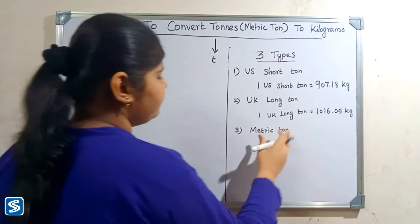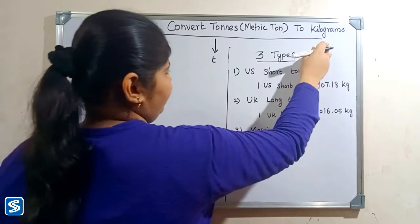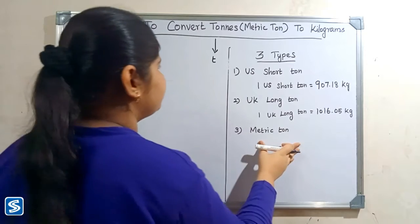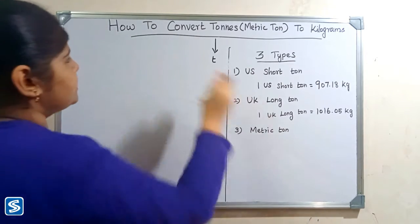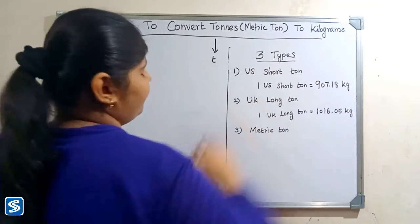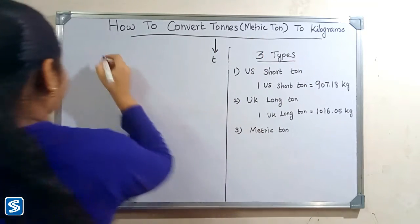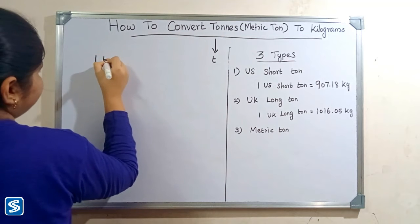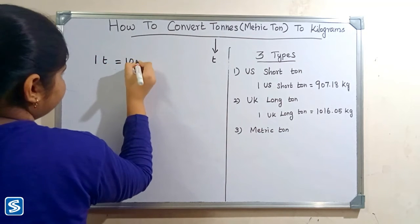Now we are going to see how to convert metric ton into kilograms. Metric ton is also called a tonne. To convert metric ton into kilograms we use the formula: one metric ton is equal to 1000 kilograms.